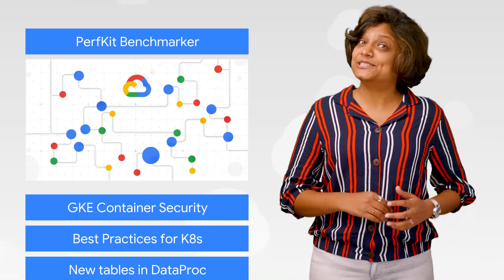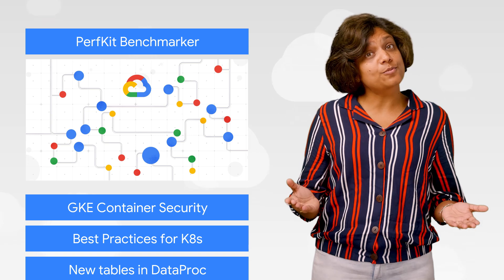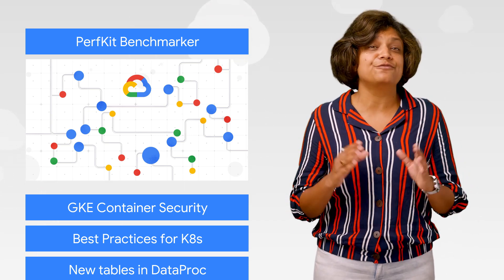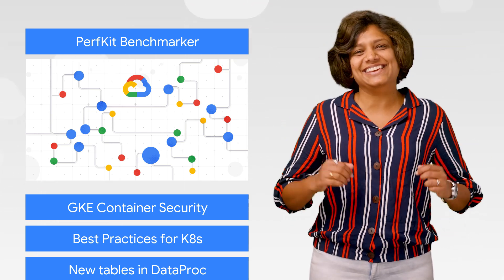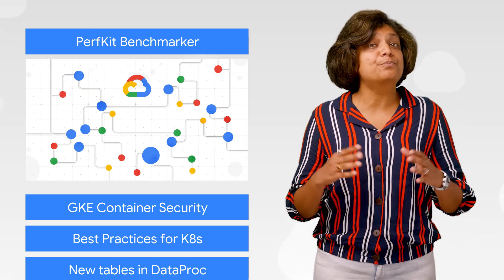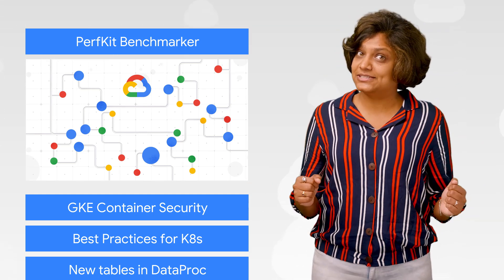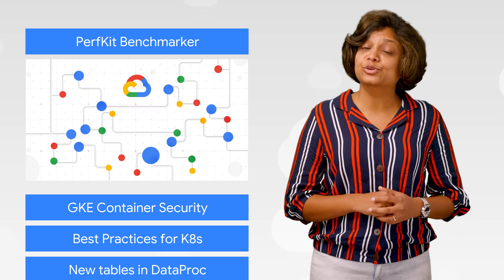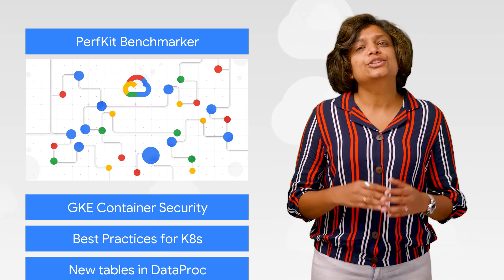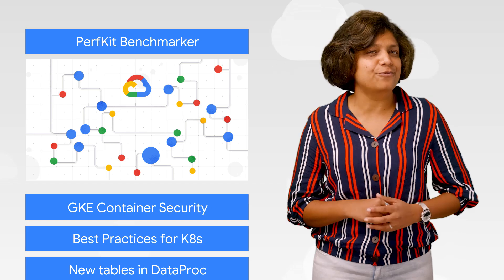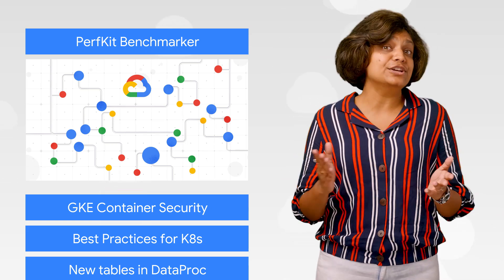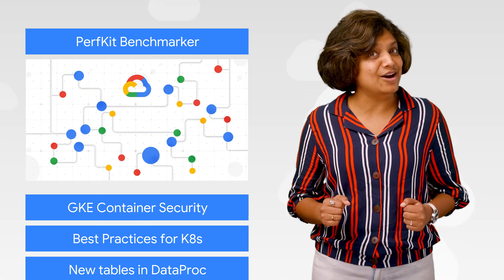We've just expanded PerfKit Benchmarker, the open source tool that makes network performance benchmarking faster and easier. PerfKit Benchmarker now supports a broader range of network performance tests and lets you view the results in Google Data Studio. The goal is to help you predict the performance impact of moving workloads to and across different clouds.